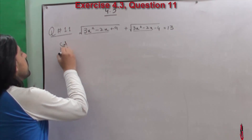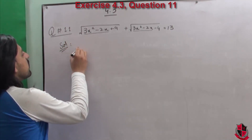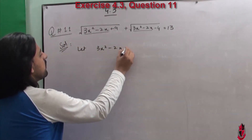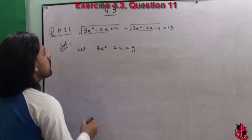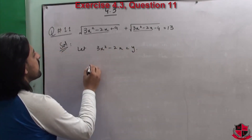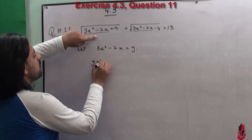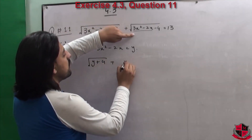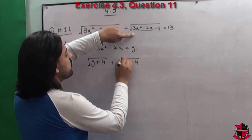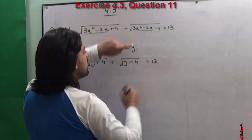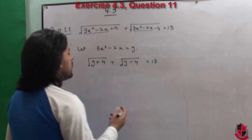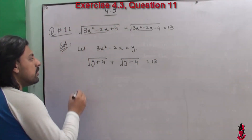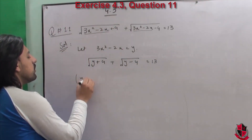How will we solve it? हम लोग इसको substitute करेंगे into another variable — let y = 3x²-2x. तो आप लोग का question बन जाएगा: this will become √(y+9) + √(y-4) equals to 13. Now to eliminate the square roots, we will square both sides.